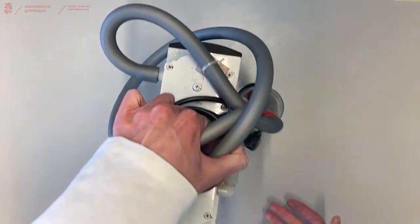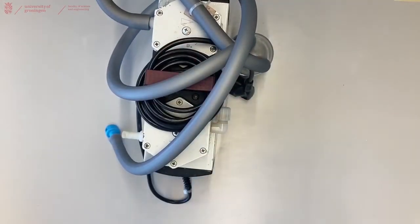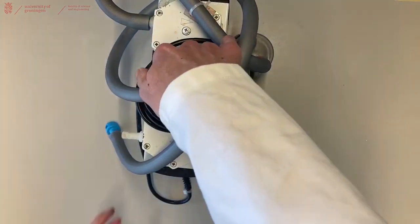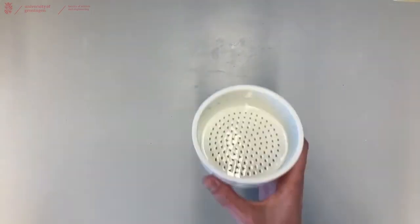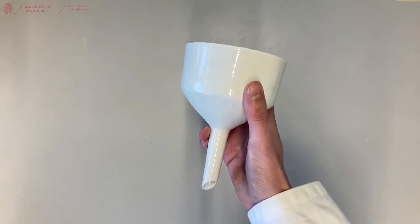For vacuum filtration you will need a vacuum, and you can do this by either using a vacuum pump or using the vacuum pump that's in line in your fume hood. Besides that, you will need your filter - in this case a Buchner funnel.